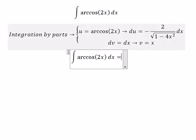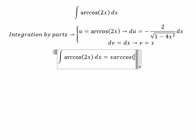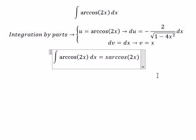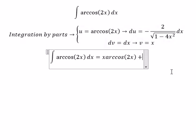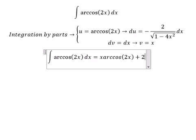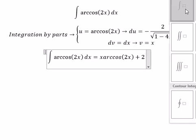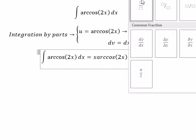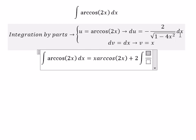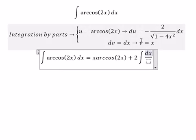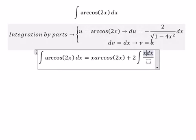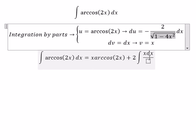We have u multiplied by v. Because we have a negative, we get positive. We have 2, and we have the integral with x over the square root.